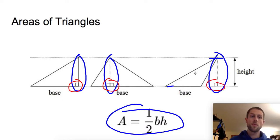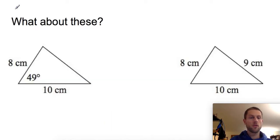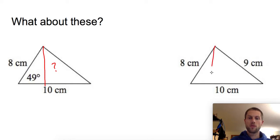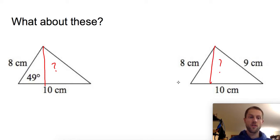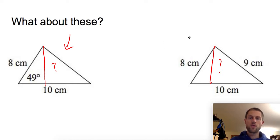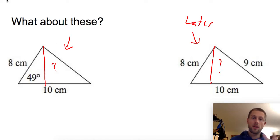All three triangles have a height that is perpendicular to the base — that's important to keep in mind. That's all well and good when we're given the height and the base. But what about triangles where I don't know what the height is? I have no idea how tall these triangles are, and we're going to need to do some work to figure out what the height is. In order to find the height, we're going to have to use trigonometry.